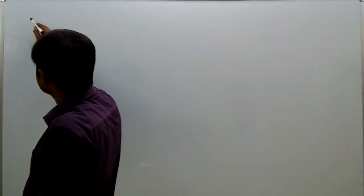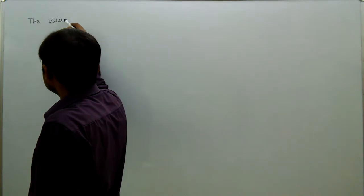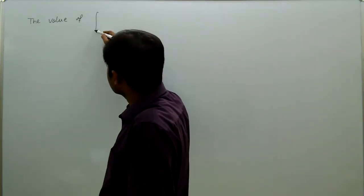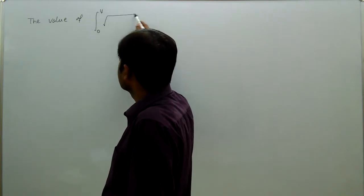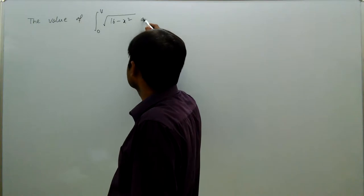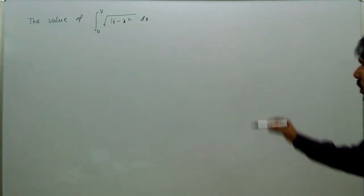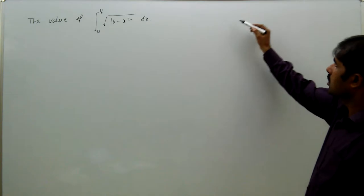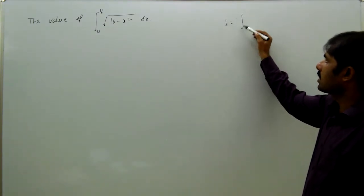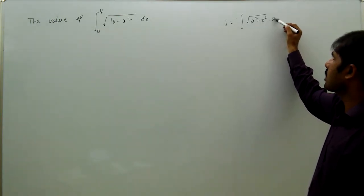Find the value of the integral from 0 to 4 of the square root of 16 minus x squared dx. We will derive the formula. Let us take i equal to the integral of square root of a squared minus x squared dx.